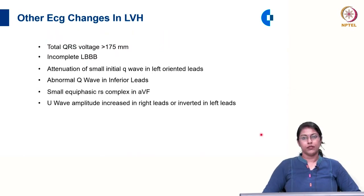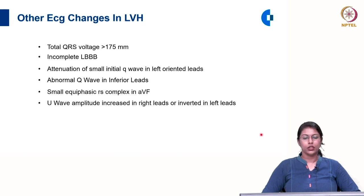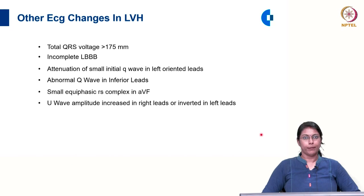Other ECG changes seen in LVH include a total QRS voltage — the sum of all QRS amplitudes in the ECG — more than 175 millimetre, presence of an incomplete left bundle branch block, attenuation of a small initial Q in left-oriented leads, abnormally large Q in the inferior leads, a small equiphasic RS complex in AVF, or a U wave amplitude that is increased in right leads or inverted in left leads.